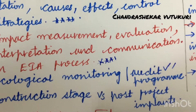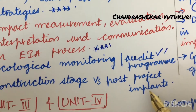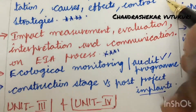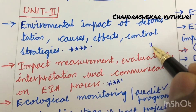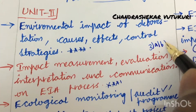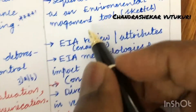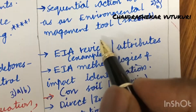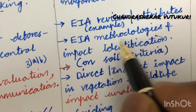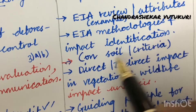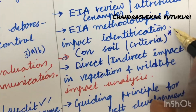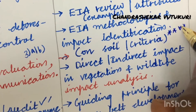Ecological monitoring and audit program — you are going to get one question. The construction stage versus post-project impacts — you are going to get one question for sure. This is all about 3A as well as 3B. EIA review along with its examples and attributes, and EIA methodologies and impact identification on soil criteria are said to be very important gunshot questions.